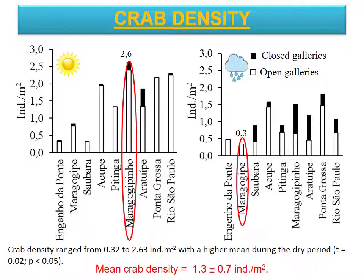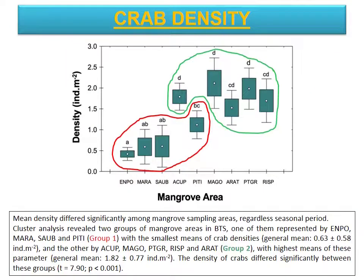Crab density ranged from 0.3 to 2.6 individuals per square meter, with a higher mean during the dry period. Mean crab density in BTS was equal to 1.3 individuals per square meter. Mean crab density differed significantly among mangrove sampling areas, regardless of seasonal period. Cluster analysis revealed two groups of mangrove areas in the BTS: circled in red, the group with the smallest means of crab densities, and circled in green, the group with the highest means.